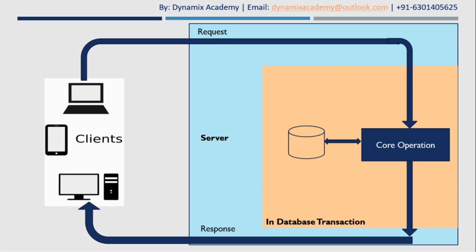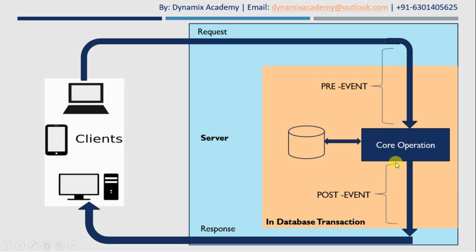Dynamics 365 offers you the ability to extend the server functionality by registering your custom business logic just before the core operation — that means you can register your custom code on a pre-event. It also gives you the ability to register your custom code after the main operation or core operation is completed, which is called a post-event. This is one of the most powerful ways to extend the functionality of the server depending on your business needs.